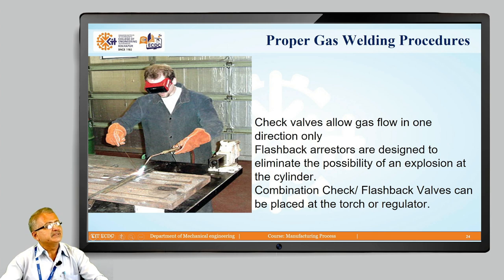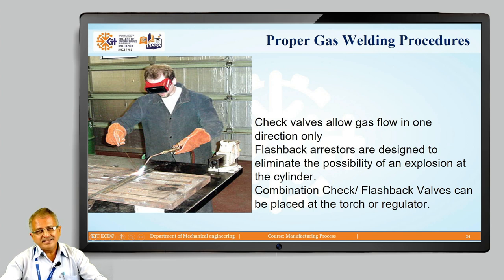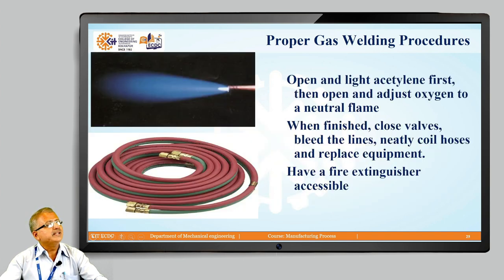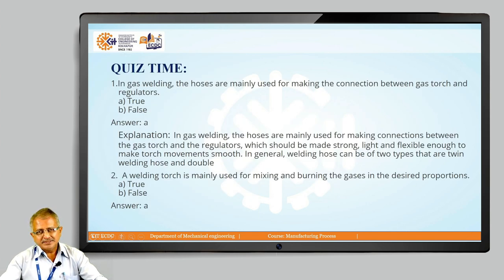All safety precautions must be used — goggles, shield, and hand gloves. Check valves allow gas flow in one direction only, and safety non-return valves are also provided. Flashback arrestors eliminate the possibility of a flame traveling back through the hoses into the cylinder, which could cause an explosion. The shutdown procedure is: open and light acetylene first, then open and adjust oxygen to a neutral flame; when finished, close the valves, neatly coil hoses, replace equipment, and ensure a fire extinguisher is available.